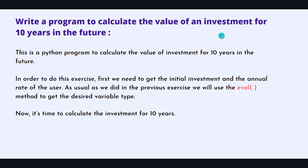Today in this exercise we're going to write a program to calculate an investment for 10 years into the future. Whenever it comes to investment, we need two things: the initial investment amount and the annual rate of the user. We'll use the eval() method as we did in the previous exercise. The two parameters we need are initial investment and annual rate.